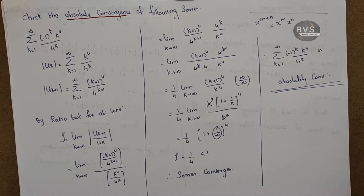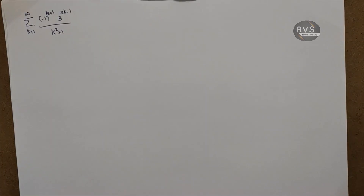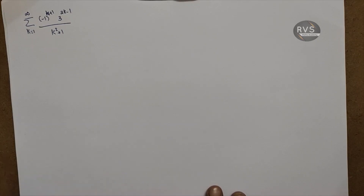If there is a plus-minus symbol it means alternating signs, but applying absolute value removes that. If the series of absolute values converges, it is absolutely convergent; if it diverges, it is absolutely divergent. Now let's finish this module. Consider summation k equals 1 to infinity of 3 raised to 2k minus 1 over k squared plus 1. This series is absolutely divergent.